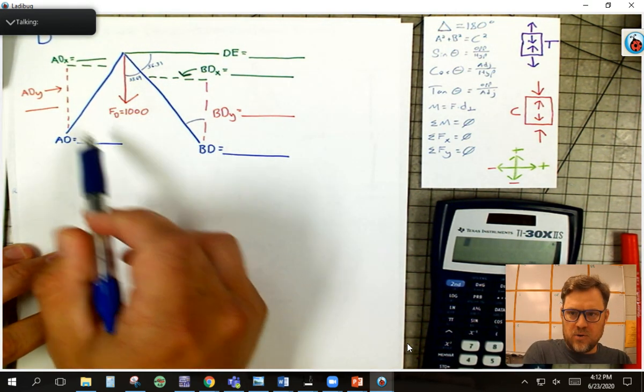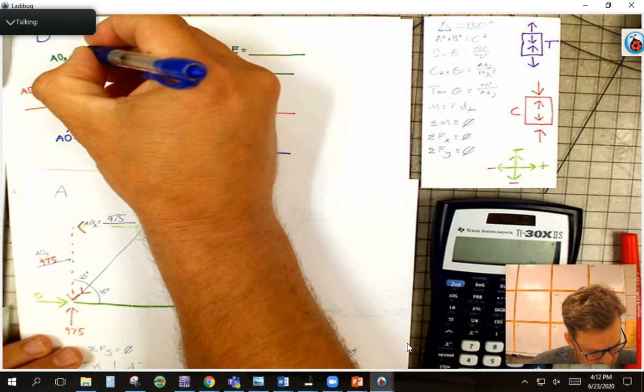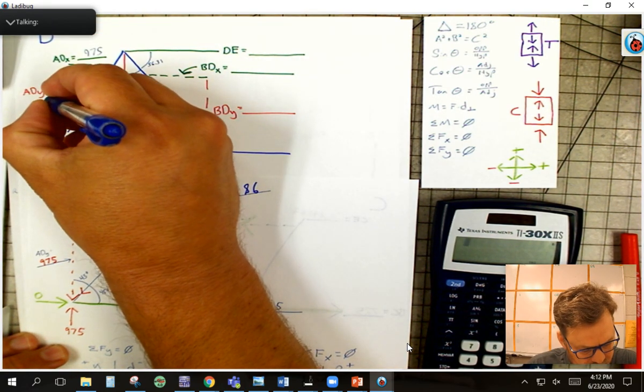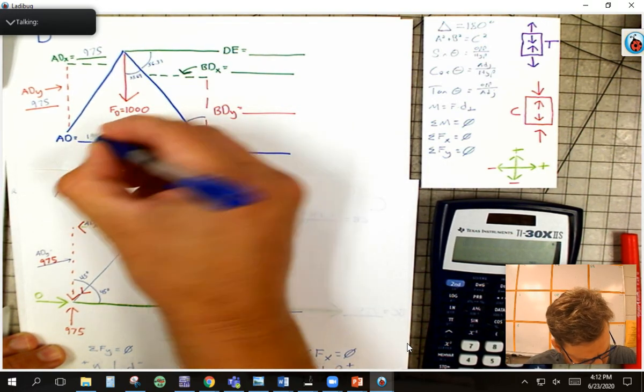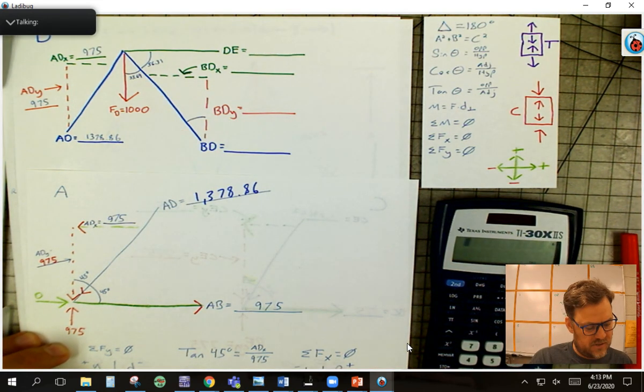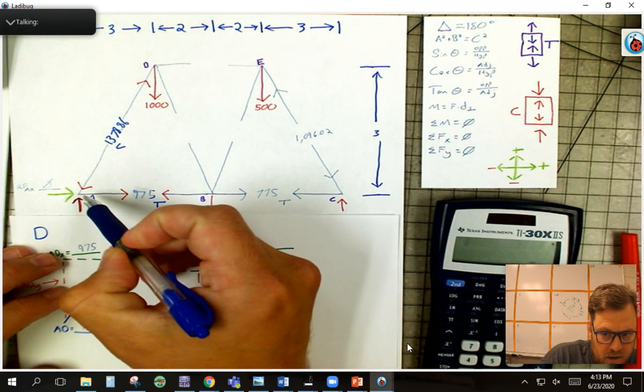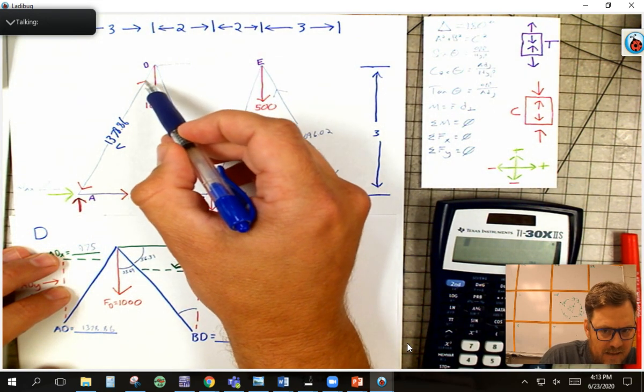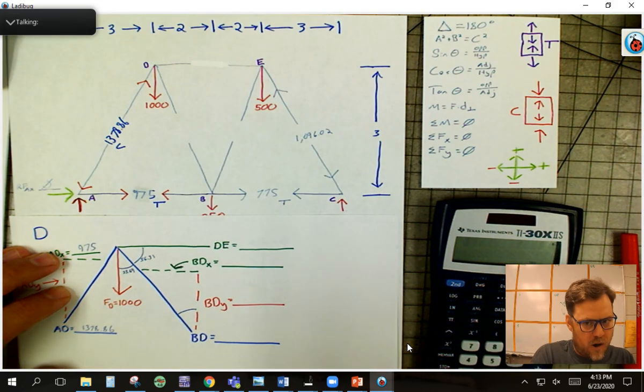So first thing I got to do is copy some of these knowns that I already know. If I go back to joint A, I know some of this stuff already. I know that this one is 975, this one is 975, this guy here, 1378.86, so I kind of know those things. The other big thing that I want to make sure is that I knew, remember over here, that this was going down and to the left at joint A, which means it's got to be opposite of that, so it's going up and to the right at D, and that's very critical that we've already marked that.